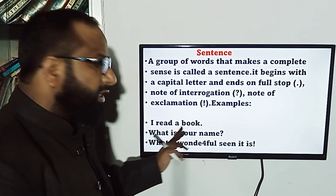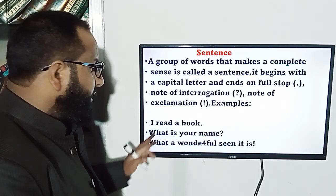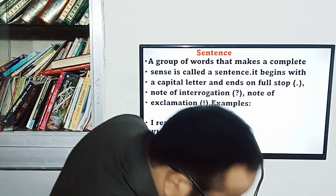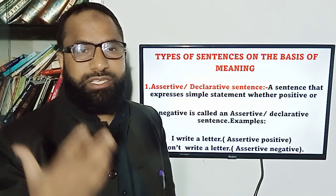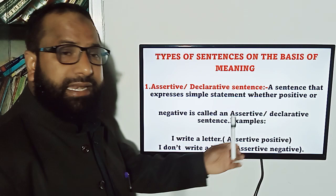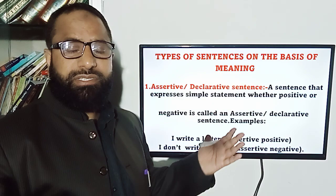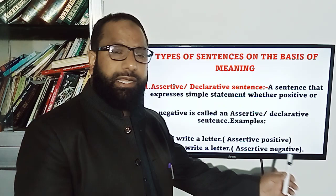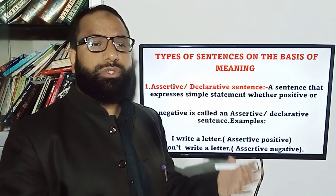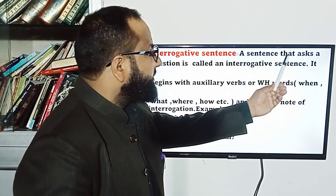An assertive sentence — also called a declarative sentence — is a sentence that expresses a simple statement, whether positive or negative. For example: 'I write a letter' is assertive positive, and 'I don't write a letter' is assertive negative. It begins with a capital letter and ends with a full stop.